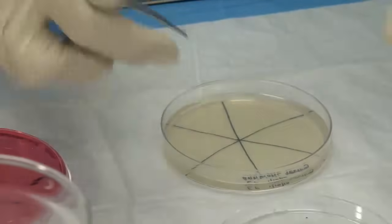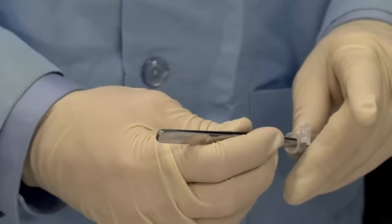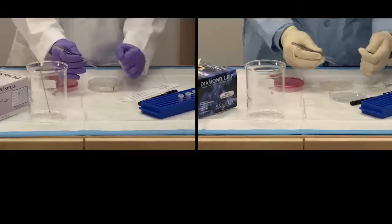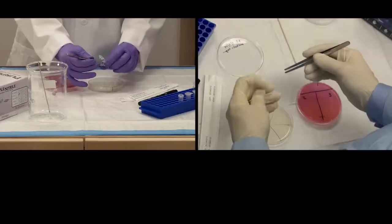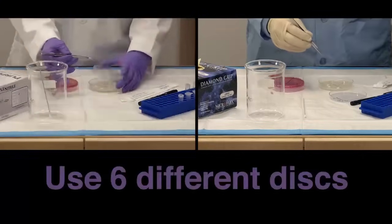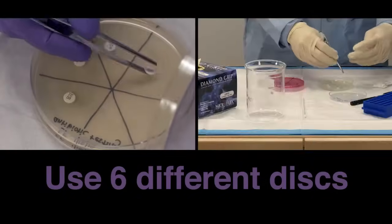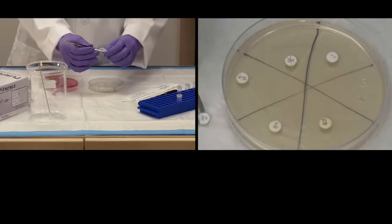When placing the discs, use the lid to shield the plate from contamination. If the disc falls out of the tweezers, leave it where it falls. Do this five more times for each of the antibiotic discs. Check the labels on the discs to make sure they are all different. We want to test how susceptible the bacteria is to each kind of antibiotic.